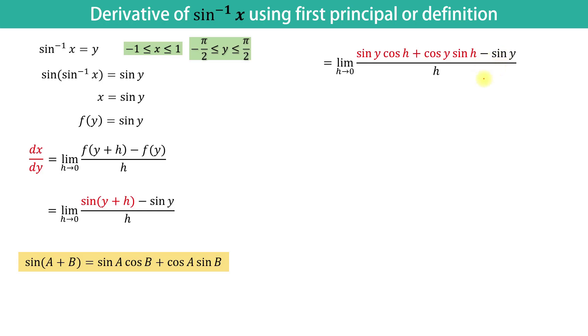We will arrange the terms and write this way. The advantage of writing in this form is we can take common factor sin y from these two terms and we get sin y times cos h minus 1 upon h plus cos y times sin h upon h when h tends to 0.